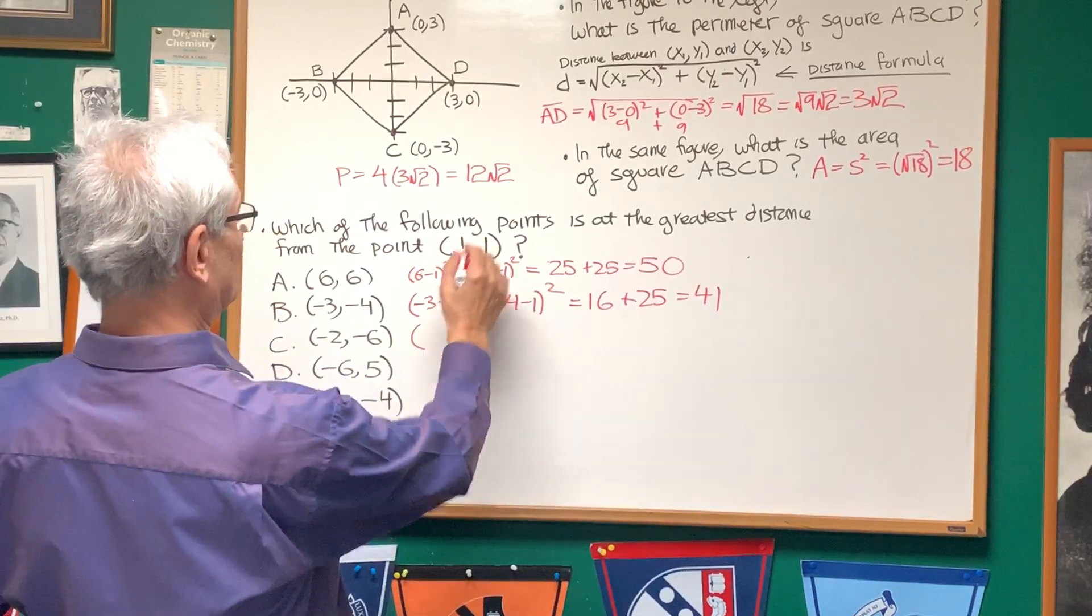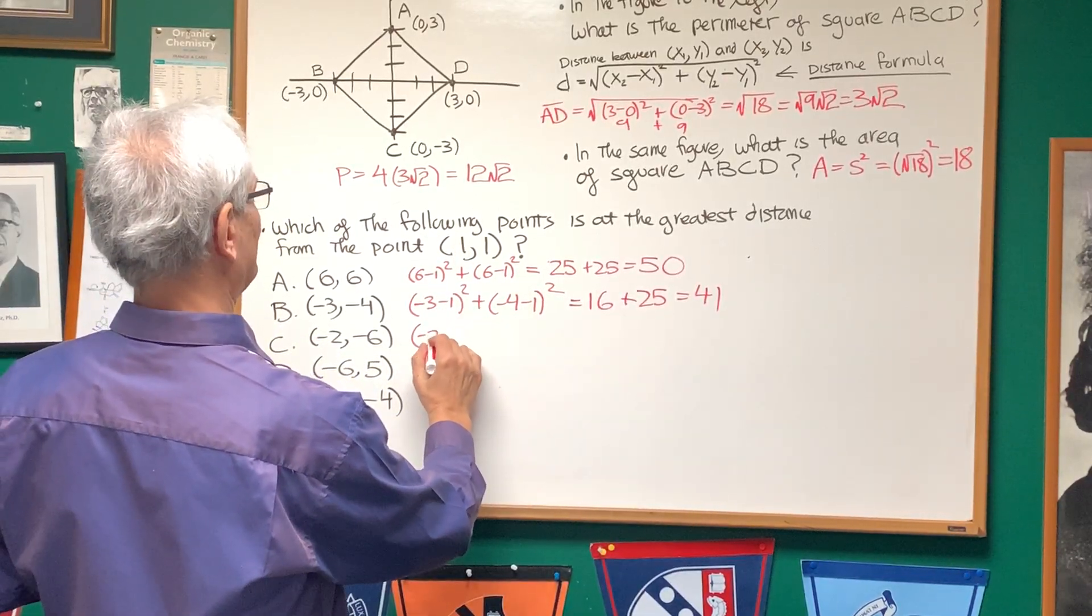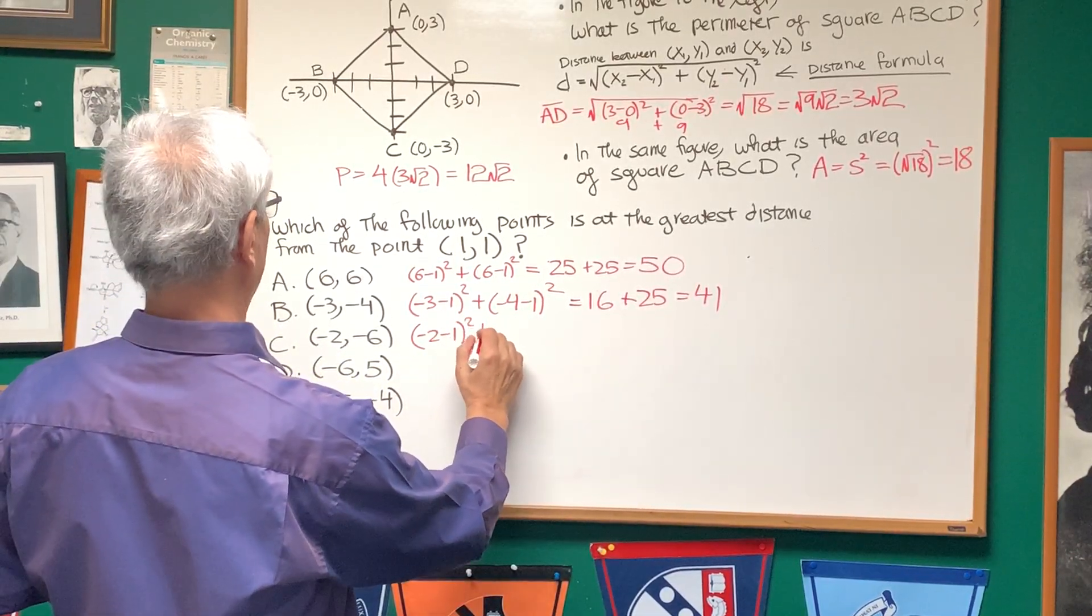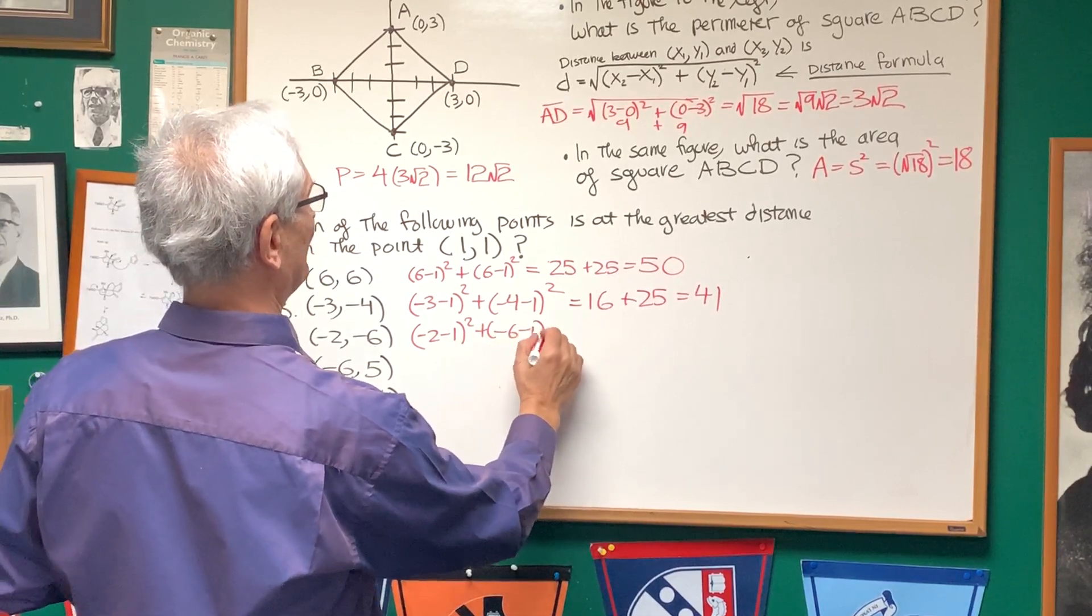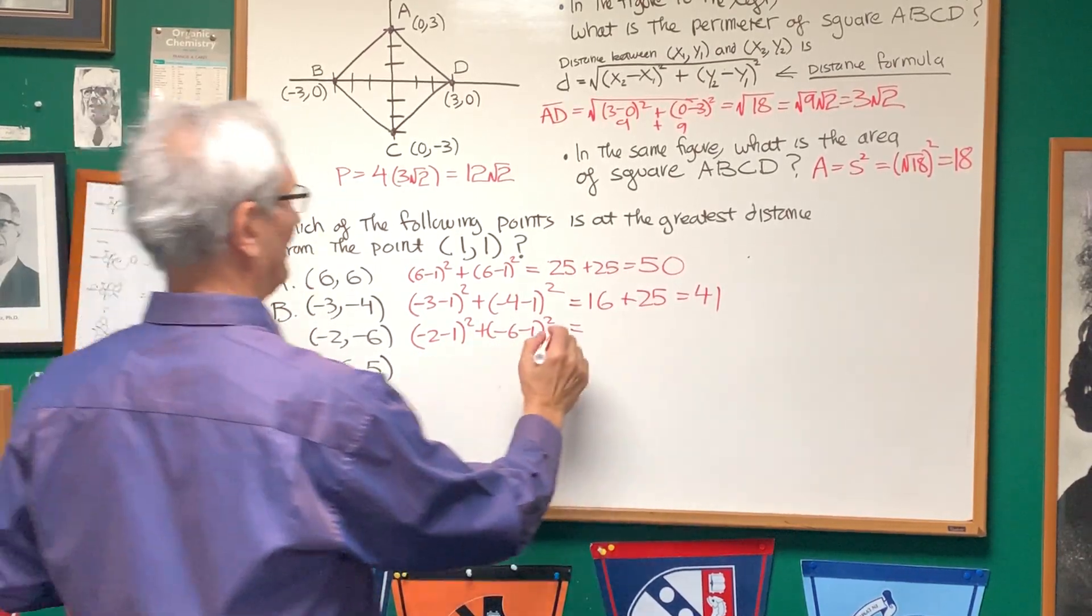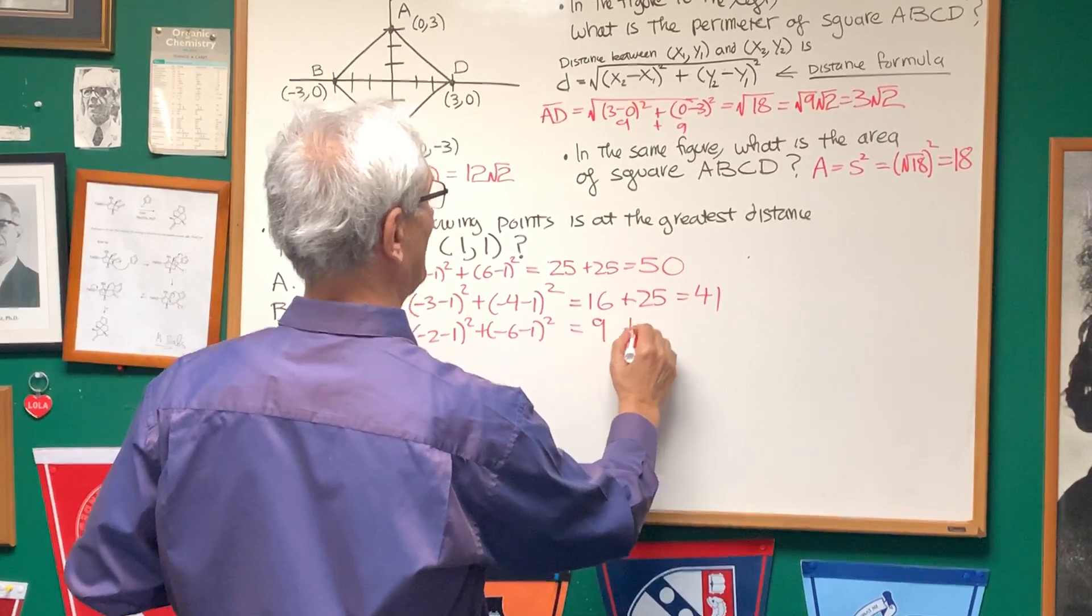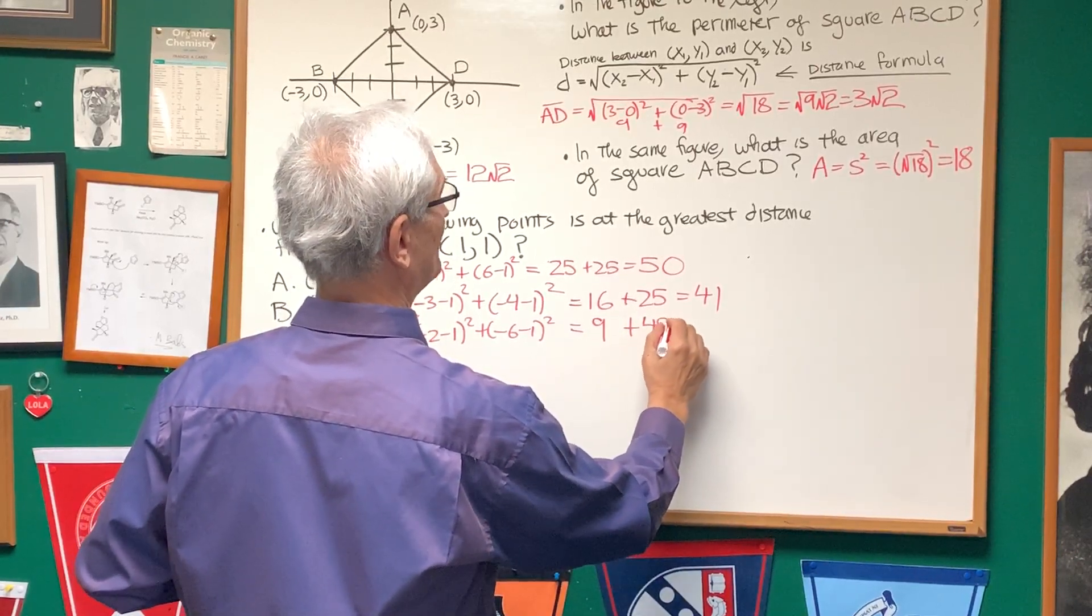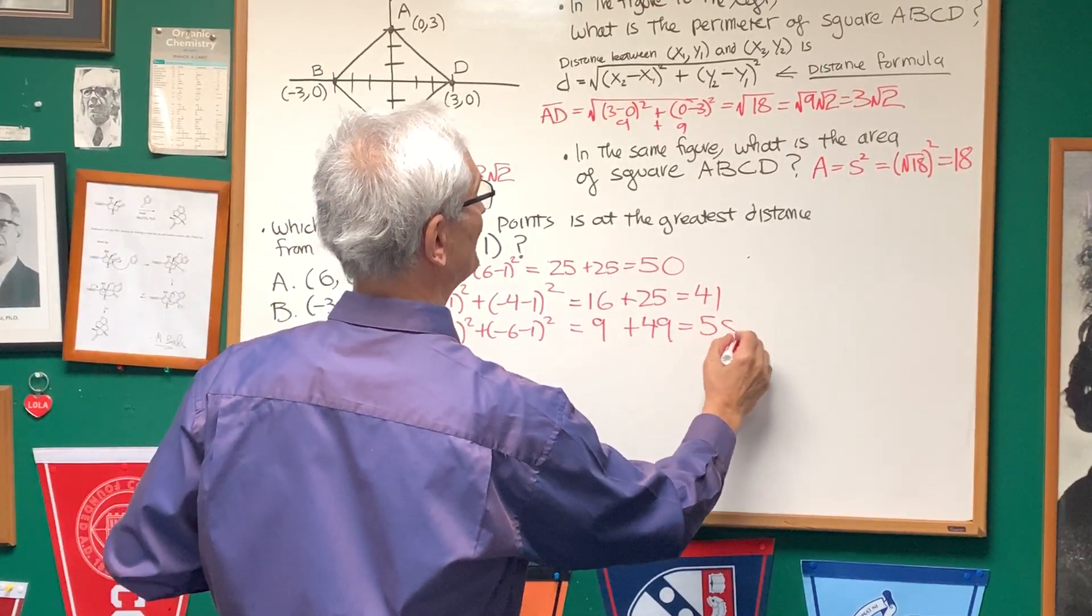All right, next one: negative 2 minus 1 is negative 3 squared, plus negative 6 minus 1 squared. That gives us negative 3 squared, which is 9, and negative 7 squared, which is 49, and that gives us 58.